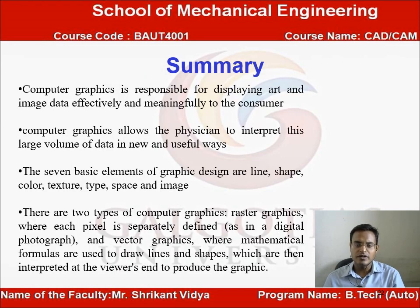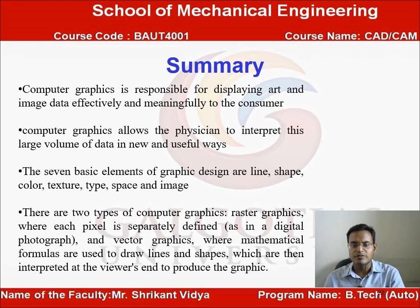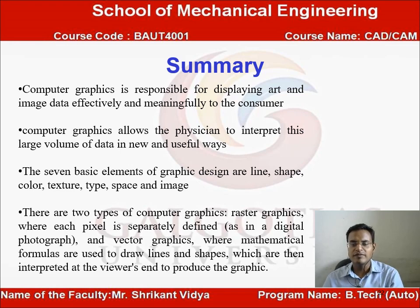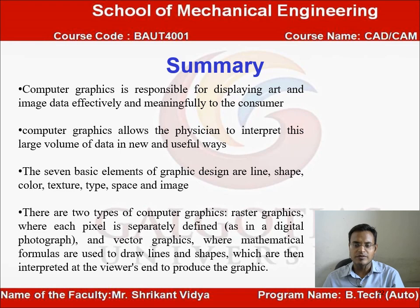In summary, computer graphics is responsible for displaying art and image data effectively and meaningfully to the consumer, allowing interpretation of large volumes of data in new and useful ways. The basic elements of graphic design include lines, shape, color, texture, type, space, and image. There are two types of computer graphics: raster graphics, where each pixel is separately defined as in a photograph, and vector graphics, where mathematical formulas are used to draw lines and shapes.